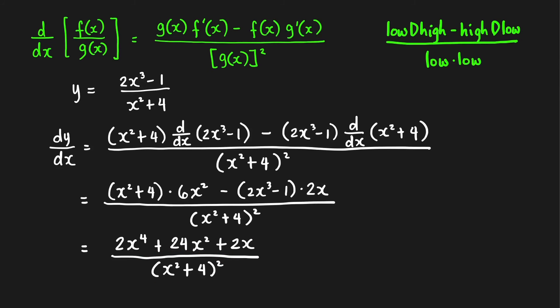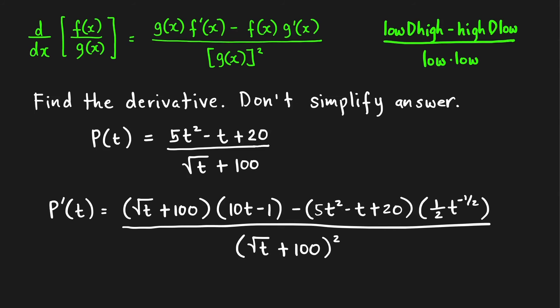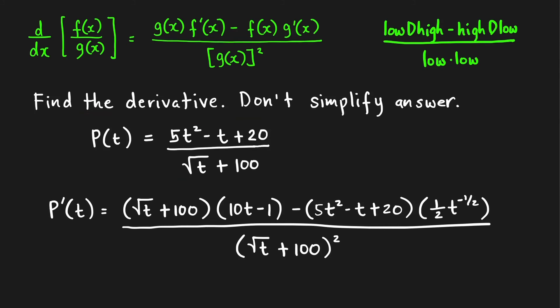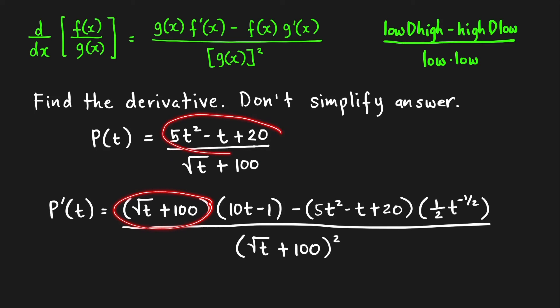Next, suppose we want to find the derivative of p(t) and we don't have to simplify our answer. Applying the quotient rule: low times the derivative of the numerator. The derivative of (5t² − t) is 10t − 1.